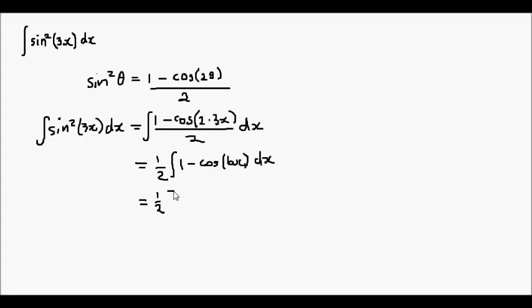So the half remains out the front. The integral of 1 integrates to x and the integral of cos is sin, but I also have to apply the opposite of the chain rule and divide by the differentiation of what's inside the brackets here. So that will come out to be divided by 6, and finishing off with a square bracket and then plus a constant of integration c.